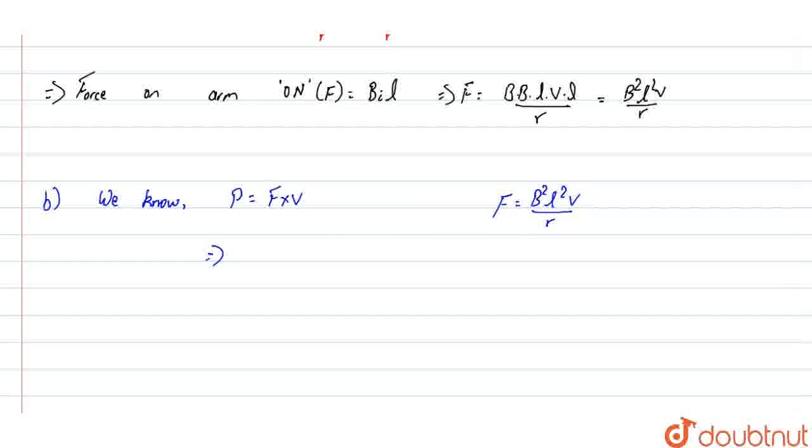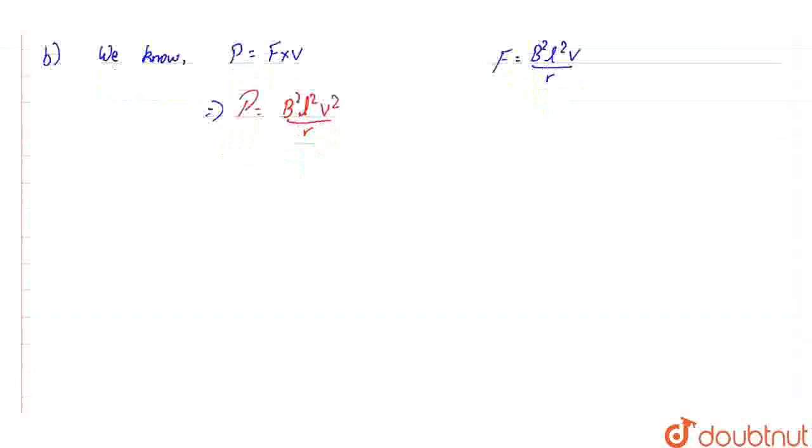Substituting F into the power equation, we get P equals B squared L squared V squared by R. With this, we can conclude the answer.